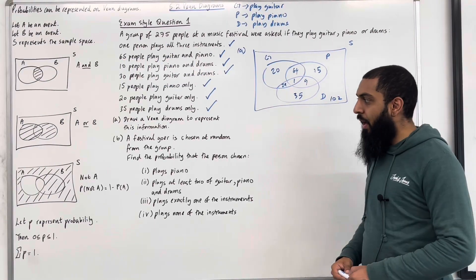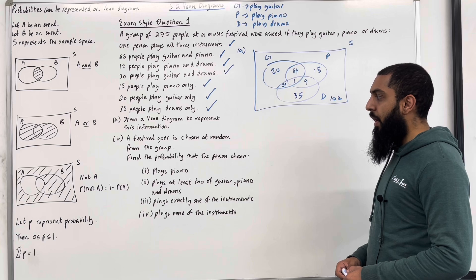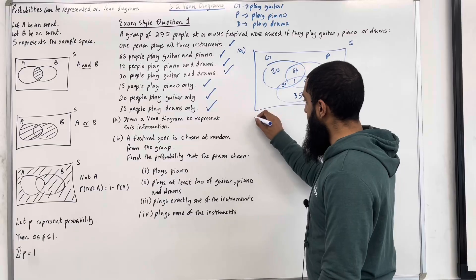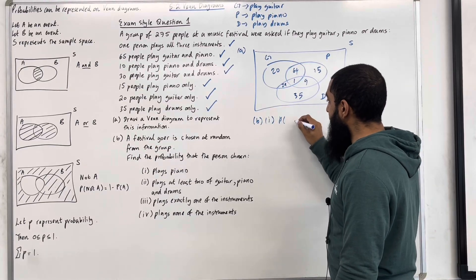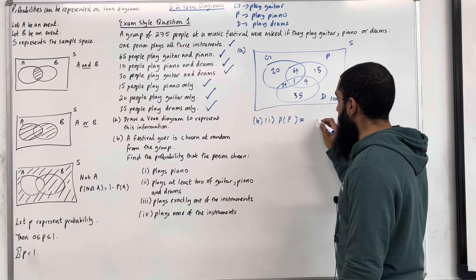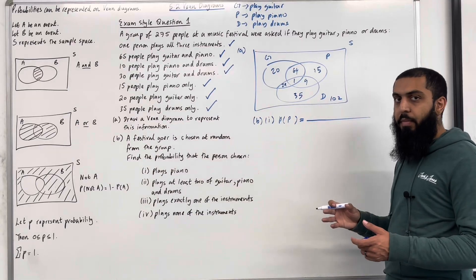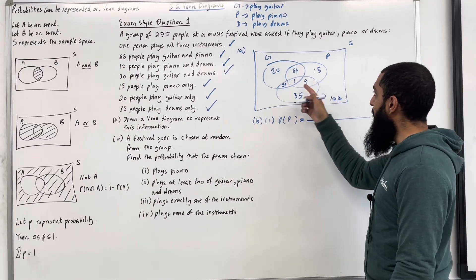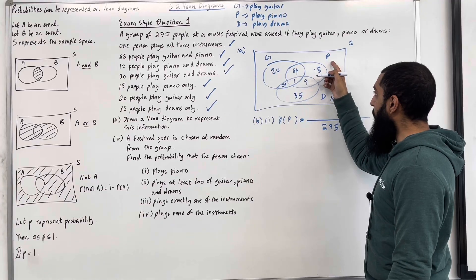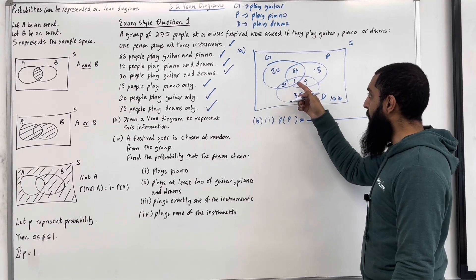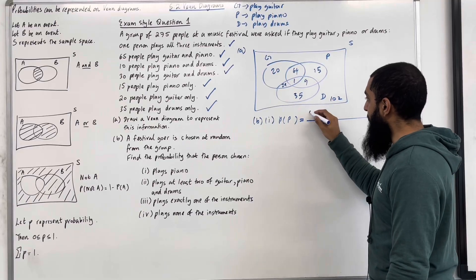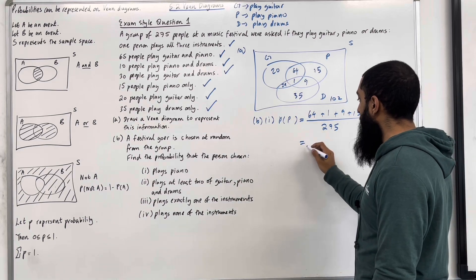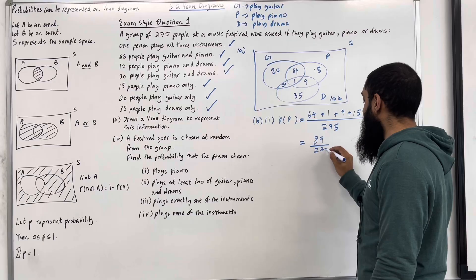Moving on to Part B. A festival goer is chosen at random from the group. Find the probability that the person chosen plays piano. The probability of plays piano: the probability is out of 275, and we add up all the numbers inside the piano circle — 64 plus 1 plus 9 plus 15 — which gives 89. So the probability is 89 out of 275.